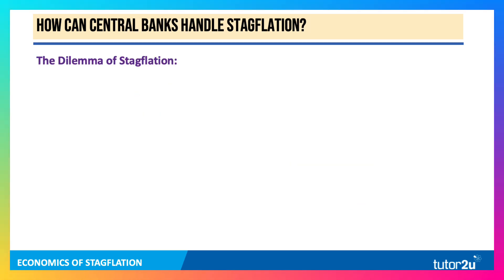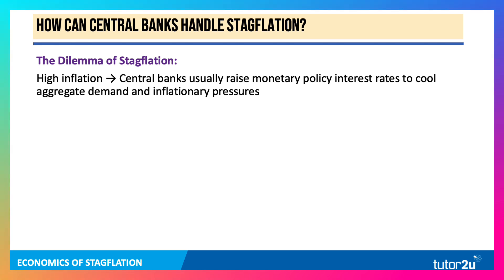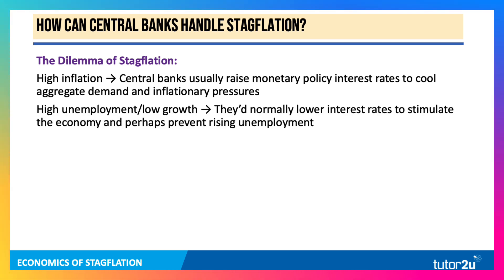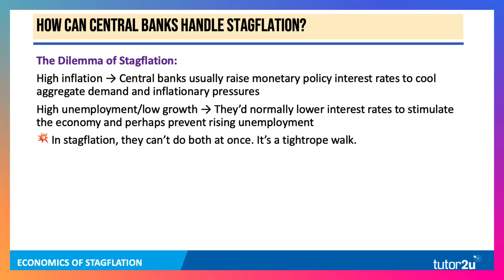How can central banks handle stagflation? There's a dilemma — and this is a really good bit of analysis and evaluation to think about. On the one hand, when inflation is high, central banks are normally raising interest rates, tightening monetary policy to cool demand and inflationary pressure. But when unemployment is high and growth is weak, central banks would normally be lowering interest rates to stimulate the economy and prevent rising unemployment, perhaps even a recession. So in stagflation, they can't do both at once — they are walking a tightrope.